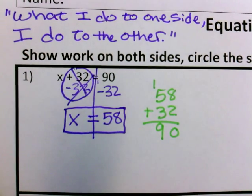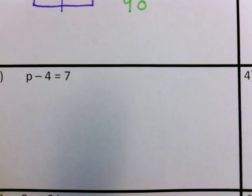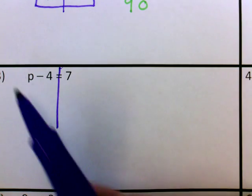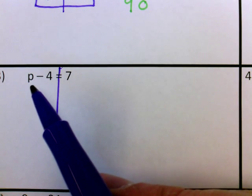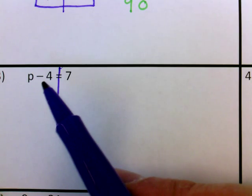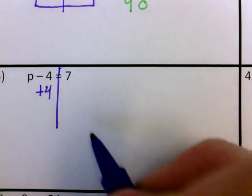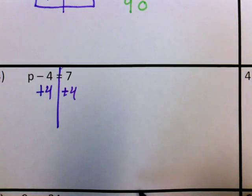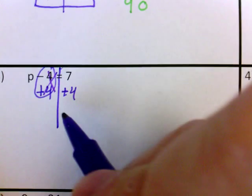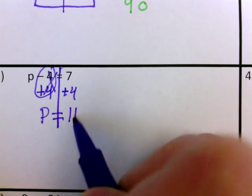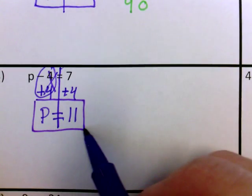That's an addition equation. Now I come down here to a subtraction equation. I have p minus 4 equals 7. I'm going to draw my line straight down so I have my two sides. Over here, I have p minus 4. I want to isolate the variable — get p by itself. So I'm going to do the opposite of subtract 4: I'm going to add 4. What I do to one side, I have to do to the other. A minus 4 and a plus 4 cancel out. So I'm just left with p equals 7 plus 4 is 11. I box out my answer.